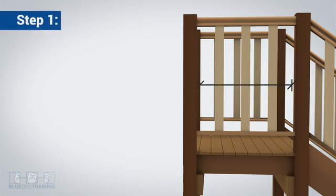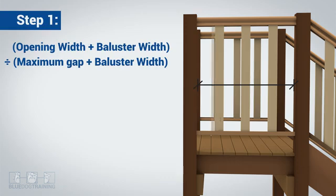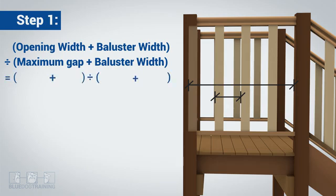Step 1: Divide the Newell opening width plus one baluster cover width by the maximum allowable gap plus one baluster cover width. This measurement will give us an equal number of gaps and balusters. In this case, the Newell opening width is 618mm, the baluster cover width is 42mm, and the maximum allowable gap specified is 125mm.